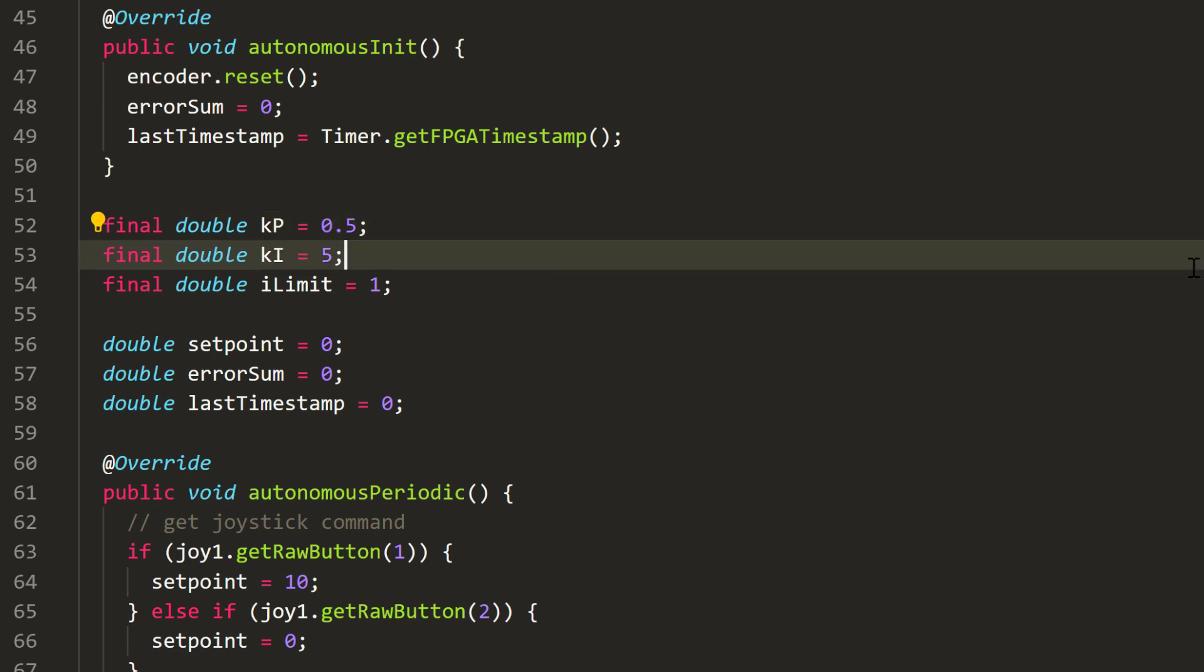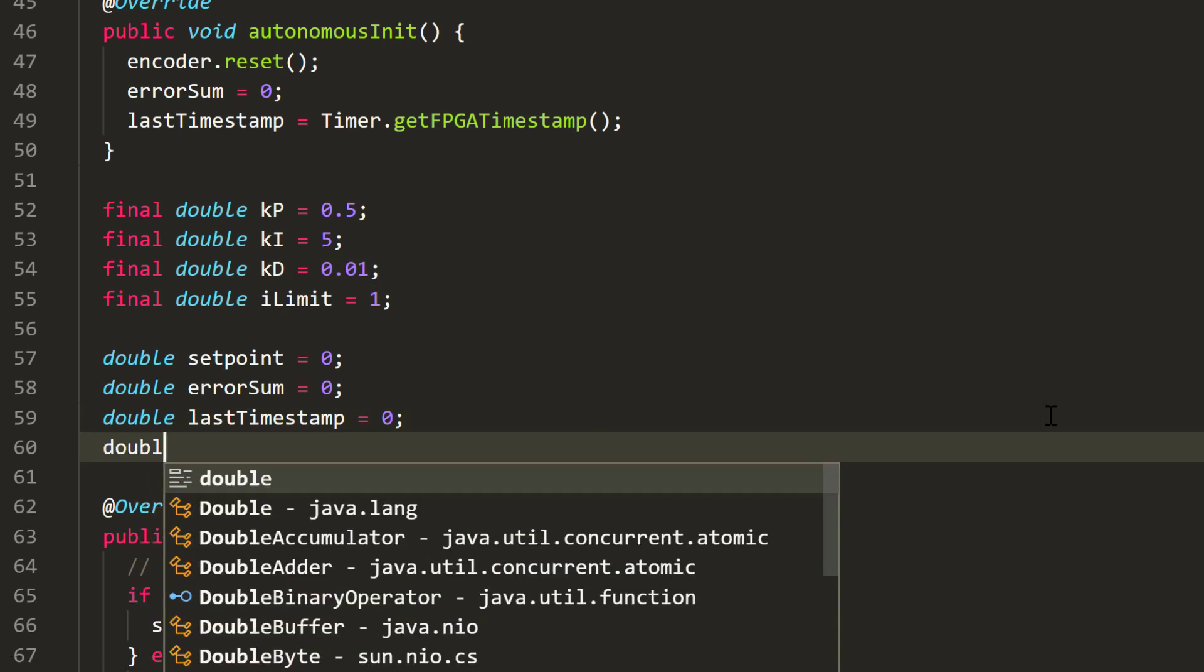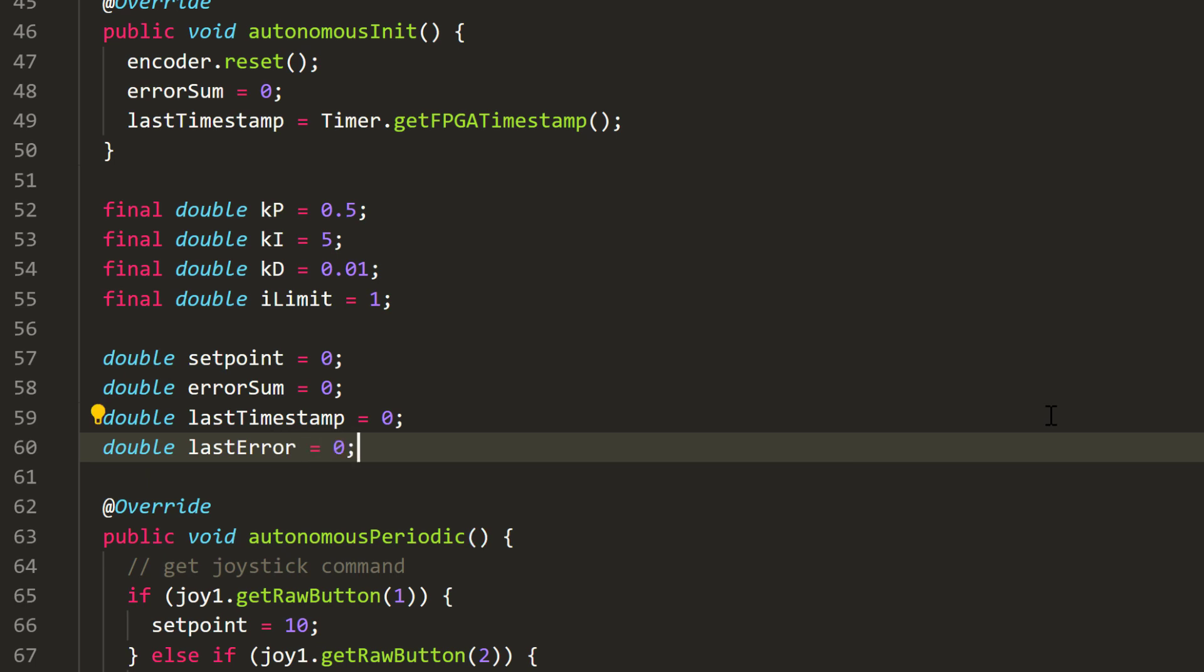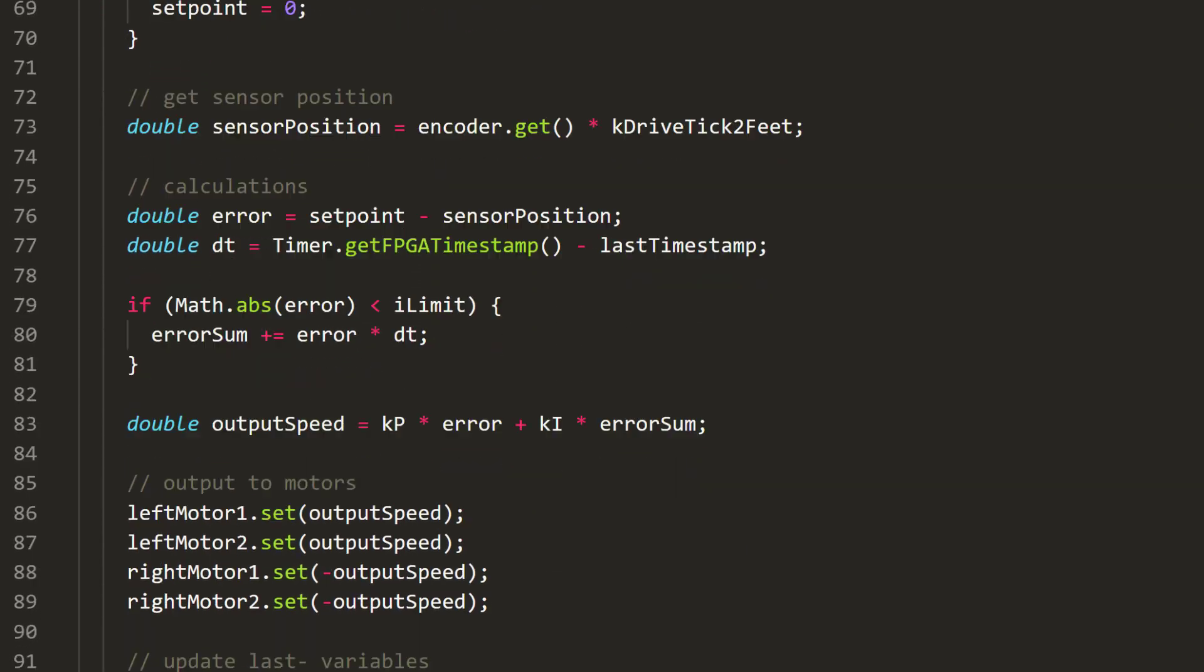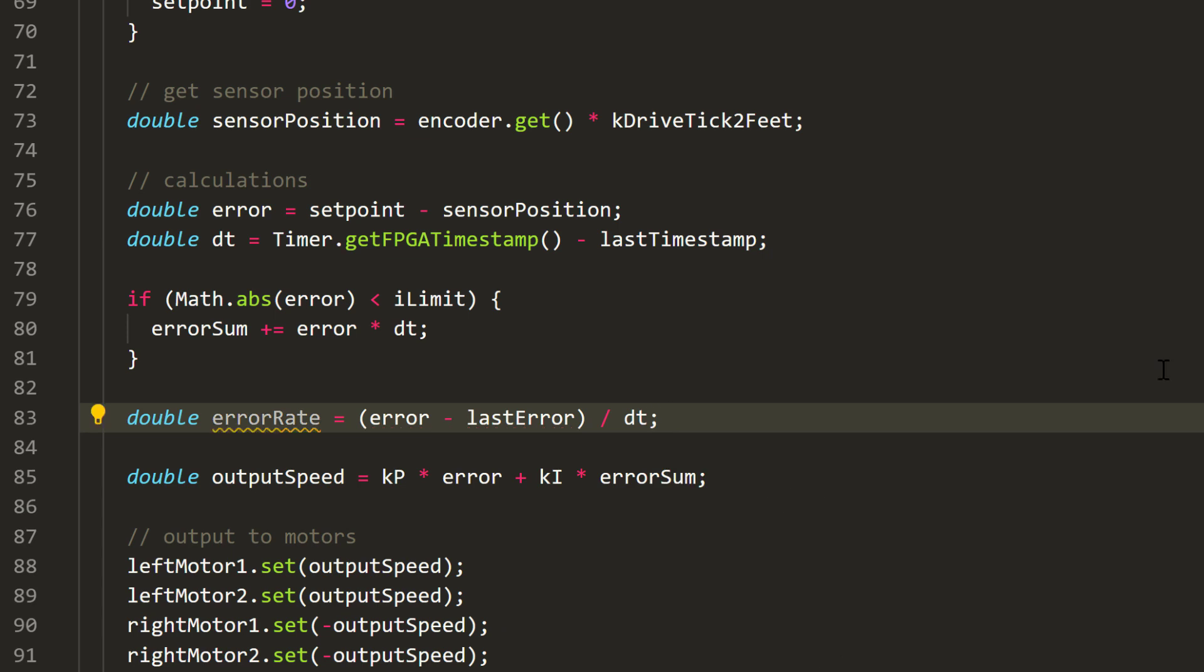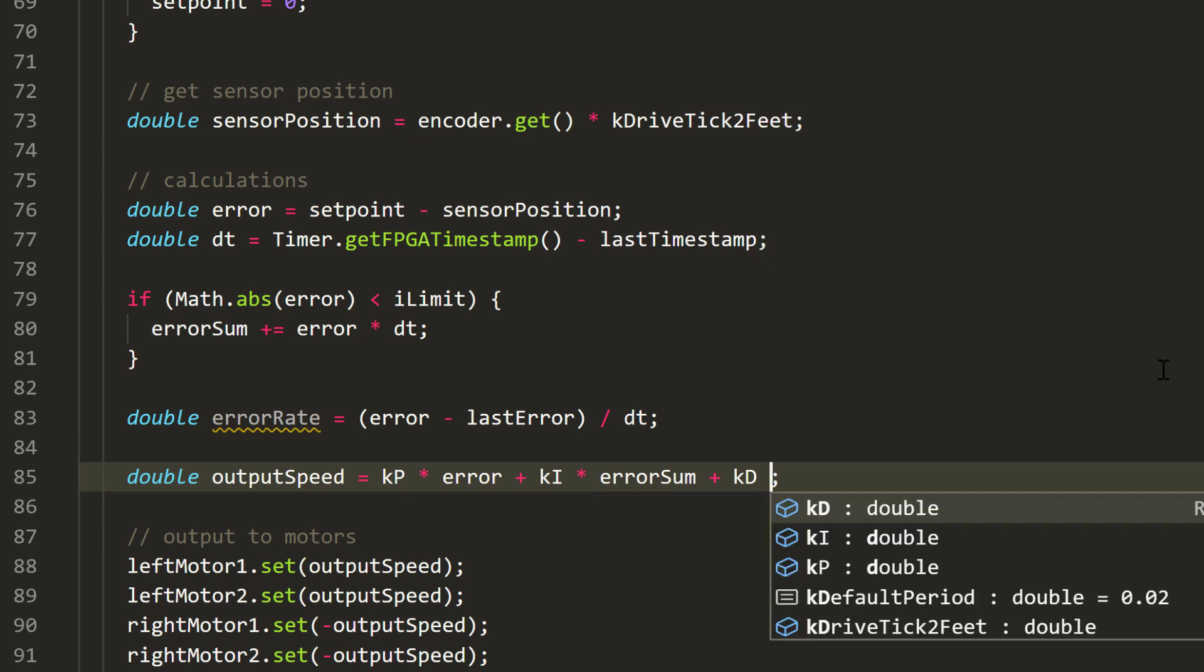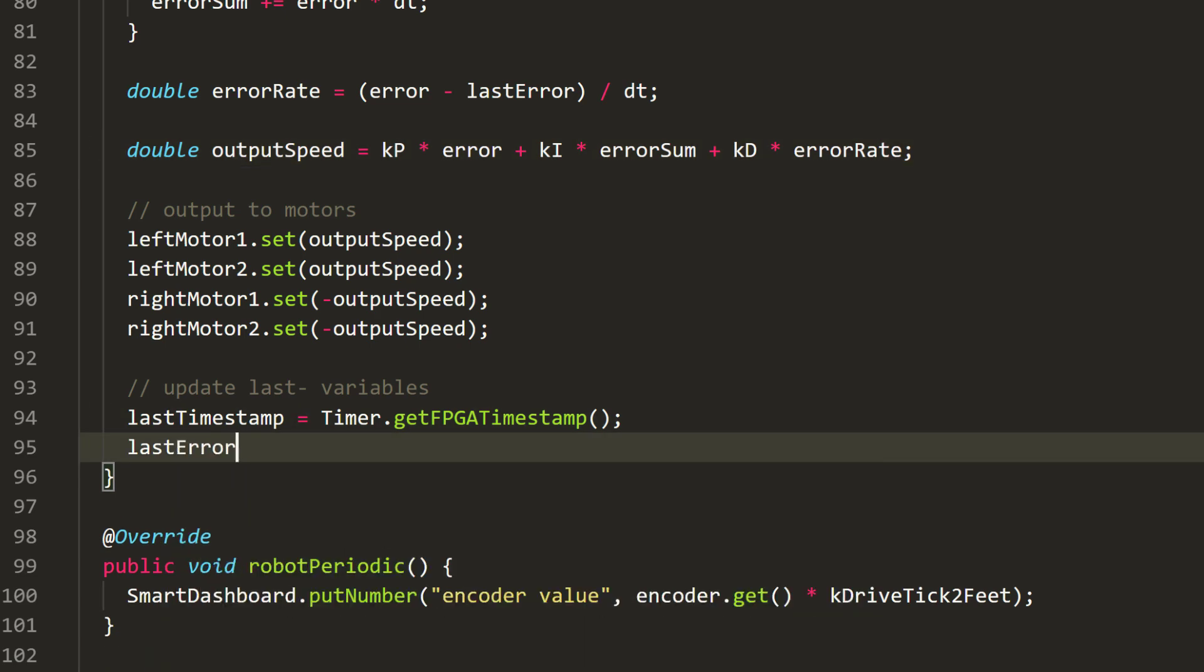To implement the D term in the code, we will set up another constant variable to store KD. And this time, let's just choose a random yet reasonable guess of 0.01. And we need a global variable to store the previous error value. And let's reset it every time PID runs. Then, every time when we execute the code, the slope of the error is equal to the change in error divided by the change in time. And this is the rate at which the error is decreasing. Finally, we will add KD times error rate to the equation. And let's not forget to update the last error variable. Now let's run the code.